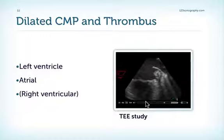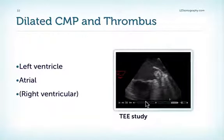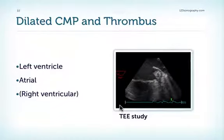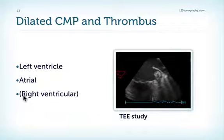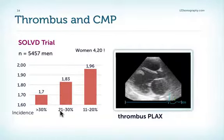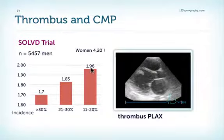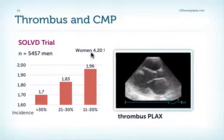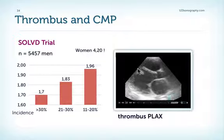Finally, be aware that patients with reduced left ventricular function such as those with dilated cardiomyopathy have an increased risk of thromboembolism. You can find thrombi in the left ventricle or in the atrium — specifically in the left atrial appendage in patients who also have atrial fibrillation — and also on occasion in the right ventricle. The SOLVD trial data show that the risk of left ventricular thrombus in cardiomyopathy depends on the degree of left ventricular function: the poorer the LV function, the higher the risk, and this is true for men and even more so for women. Here is a parasternal long axis view showing a highly mobile thrombus protruding far into the left ventricle.